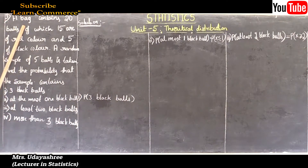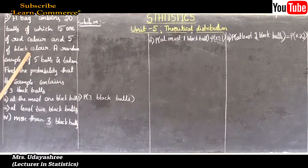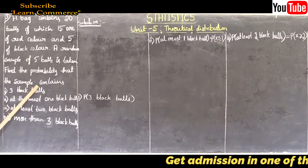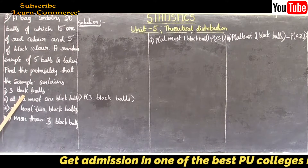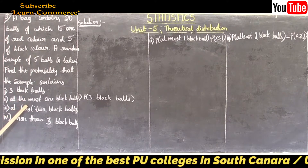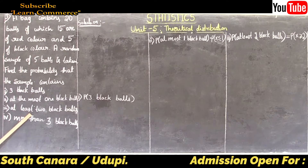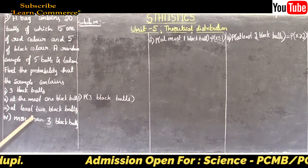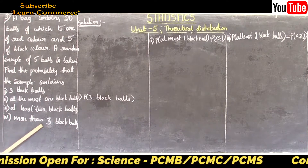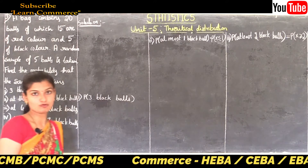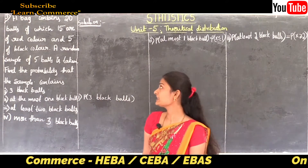A bag contains 20 balls, of which 15 are of red color and 5 are of black color. A random sample of 5 balls is taken. Find the probability that the sample contains: first, three black balls; second, at most one black ball; third, at least two black balls; and fourth, more than three black balls.